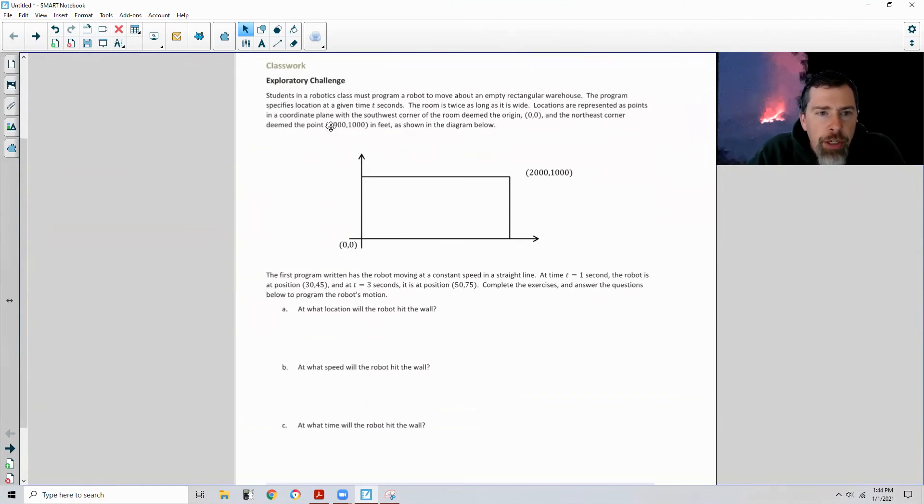Classwork exploratory challenge. Students in a robotics class must program a robot to move about an empty rectangular warehouse, as seen in that video if you watched it. The program specifies location at a given time t seconds. The room is twice as long as it is wide, 1,000 by 2,000. Locations are represented as points in the coordinate plane with the southwest corner of the room deemed the origin (0,0) and the northeast corner deemed the point (2,000, 1,000) in feet as shown in this diagram.